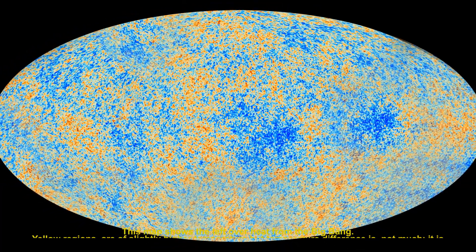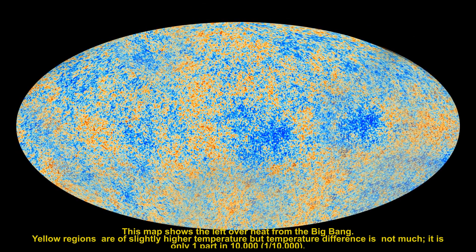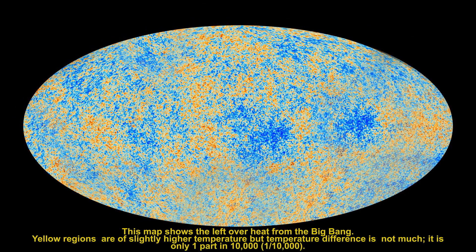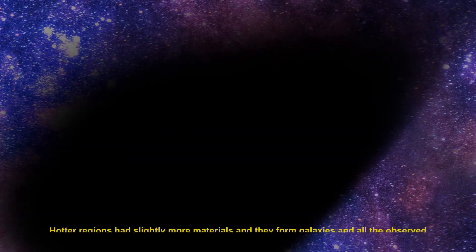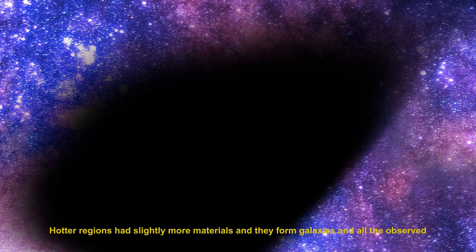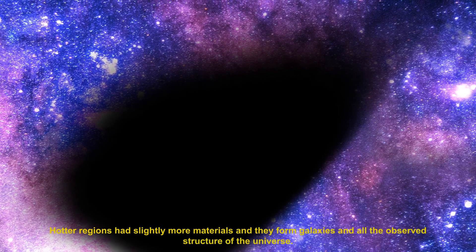Yellow regions are of slightly higher temperature than the blue regions. But the temperature difference is not much. It is only one part in ten thousand. Hotter regions had slightly more materials so that they could form galaxies and all the other observed structures in the universe.